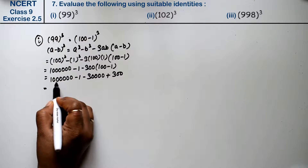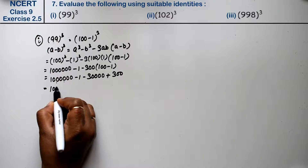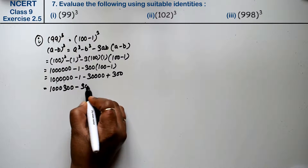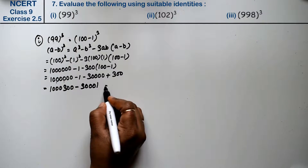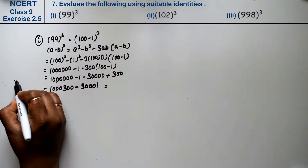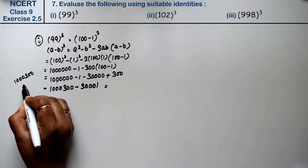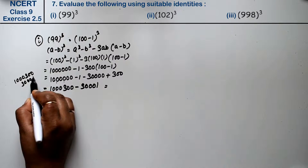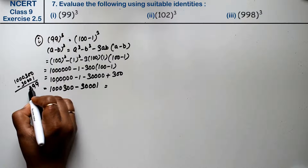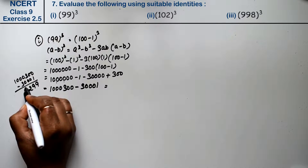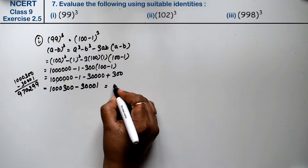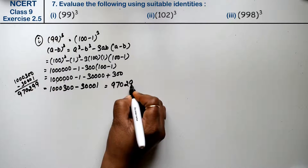Now we need to add these up. So we have 1,000,000 minus 1 minus 30,000 plus 300. The minus terms combine to give 300,001. Now subtracting: 1,000,000 minus 300,001. Working through the subtraction: 10 minus 1 is 9, and continuing digit by digit. So the answer is 970,299.